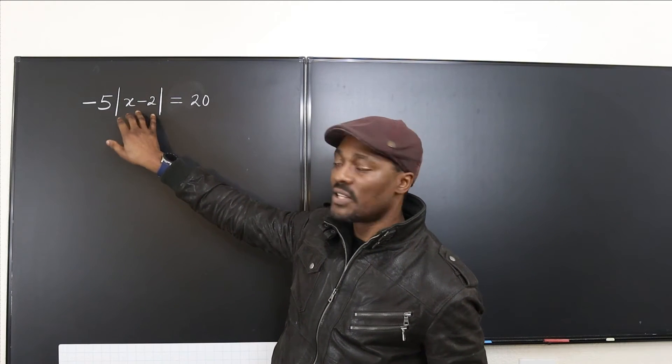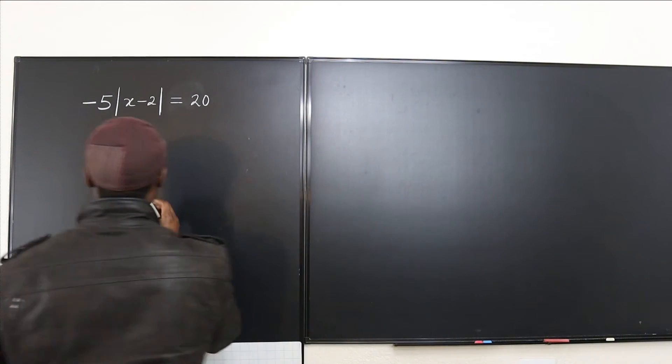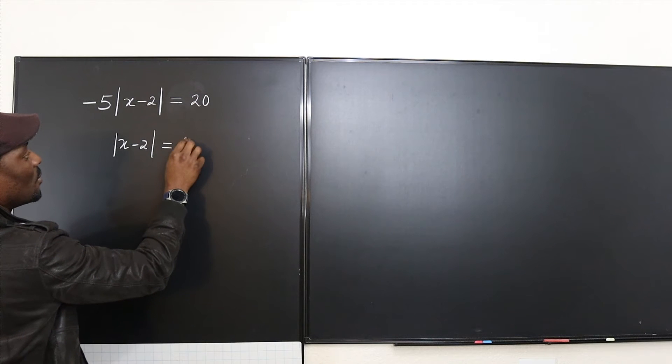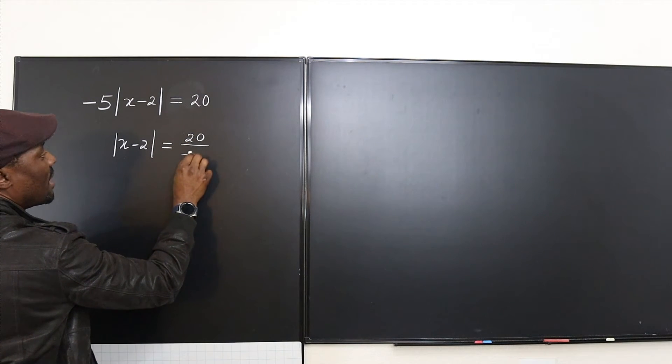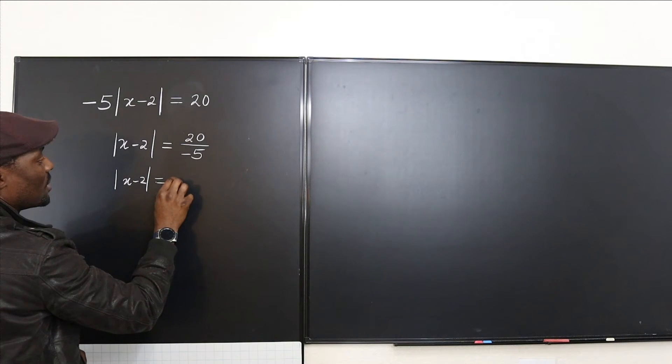We divide both sides by negative 5. We're going to end up with the absolute value of x minus 2 equal to 20 divided by negative 5. So absolute value of x minus 2 will now equal negative 4. Now look at this: the absolute value of x minus 2 equals negative 4.